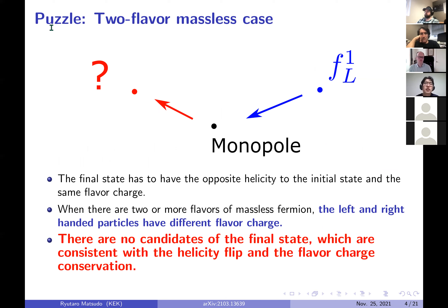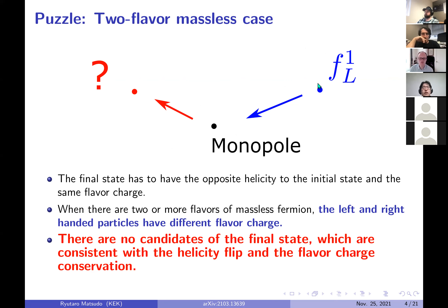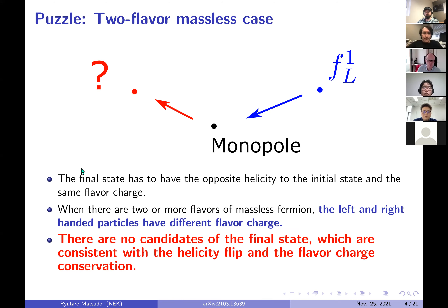Due to this property, there appears a puzzle when we consider two flavors of massless Dirac fermions. When there are two or more flavors of massless Dirac fermions, the left-handed fermion and the right-handed fermion have different flavor charges. Then the right-handed particles cannot have the same flavor charge as the left-handed one. However, according to the helicity flip, the helicity of the fermion has to flip before and after the scattering, and a puzzle appears. The final state has to be right-handed, but it also has to have the same flavor charge as the initial one, and there are no such fermions in the theory. This is the puzzle.